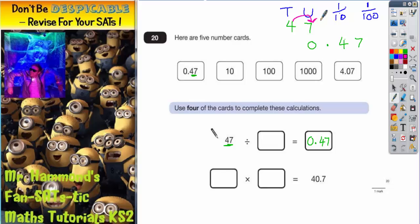Now I need to move again, divide by 100. My 4 has gone from 10 to units, units to 10s. So divide by 10, divide by 100. I need to put 100 into this box here.